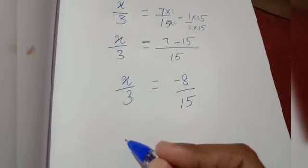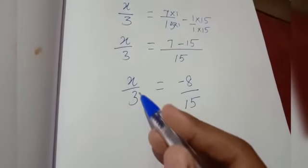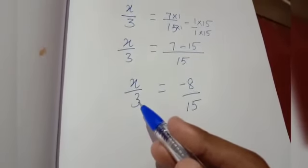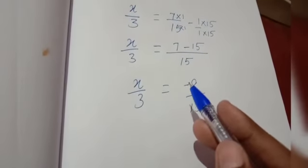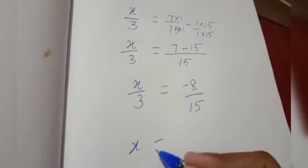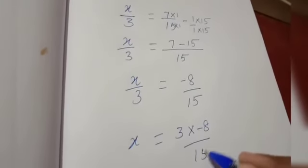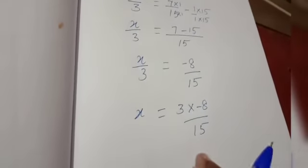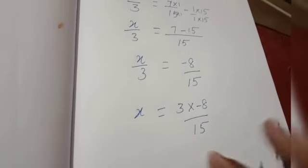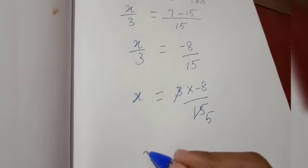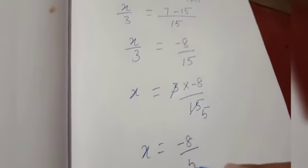Now we have to find the x value. To find x, we have to bring the denominator 3 to the right side. It is dividing on the left side, so while bringing 3 to the right side we write it in the numerator as a product. So x is equal to 3 into minus 8 by 15. Before multiplying, we can simplify because 3 and 15 are both multiples of 3. So 3 divided by 3 is 1, and 15 divided by 3 is 5. Therefore x is equal to minus 8 by 5.